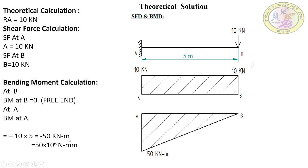Our unit should always be in newton-millimeter. To convert from kilo newton to newton we multiply by 10³, and from meter to millimeter we multiply by another 10³, giving a total factor of 10⁶. So the maximum bending moment at A is 50 × 10⁶ newton-millimeter.